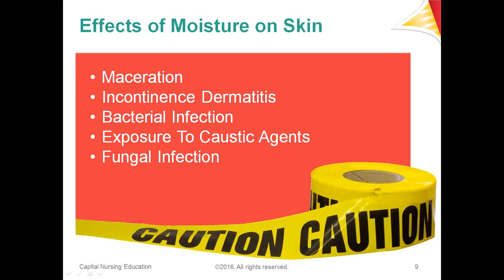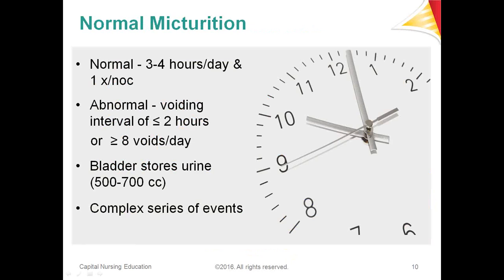As it relates to this conversation, we're talking specifically about incontinence as a source of moisture and how it can affect the integrity of the skin. The big word of the day is micturition. Micturition versus urination gives us more information. Urination is simply voiding, emptying the bladder. Micturition takes into account a much bigger picture — normal micturition includes the frequency, the volume, the entire complex series of events involved.